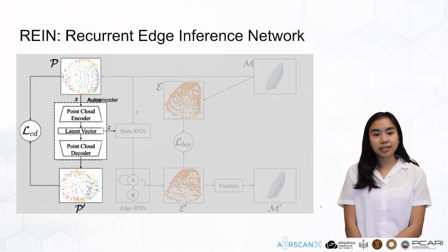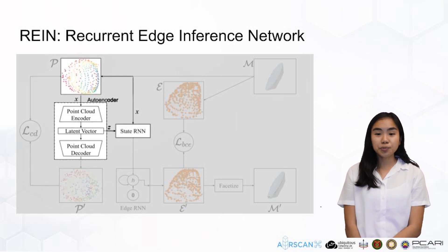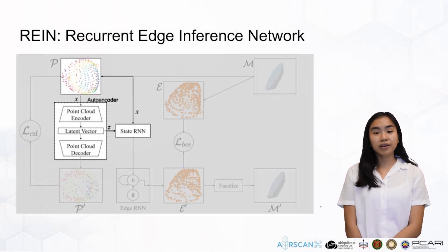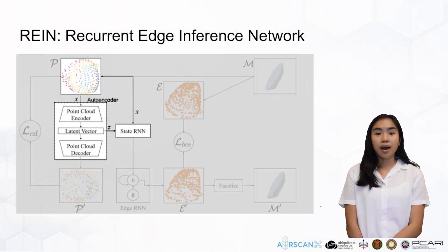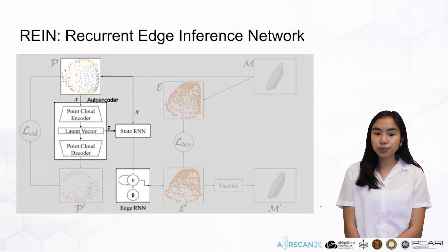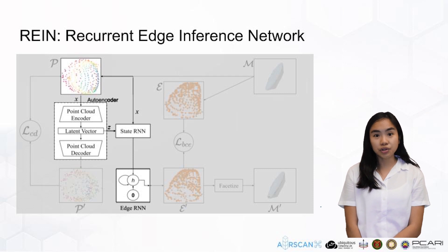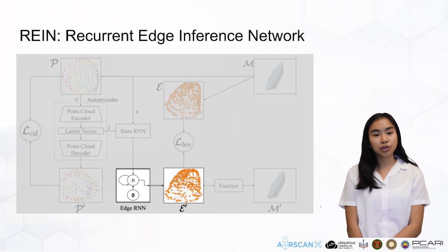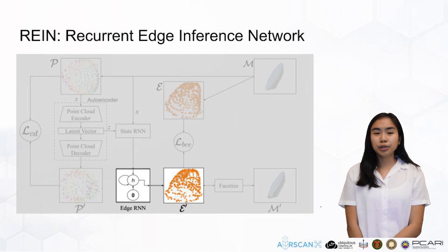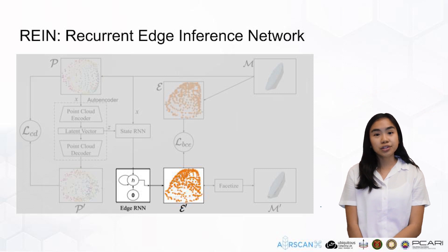The latent vector is concatenated to each point in the input point cloud and is processed by the state RNN. The state RNN continuously encodes the graph given the sequence of edge predictions and the latent representation of the point cloud input. At each time step, one point is introduced to the state RNN and edge RNN. The state RNN interacts with the edge RNN by modifying the hidden layer of the edge RNN. At this point, the set of input points should already have corresponding edges. Gated recurrent units, or GRUs, were used to both encode the mesh structure and to predict the sequence of edges in the state RNN and edge RNN.